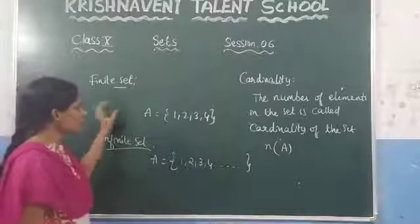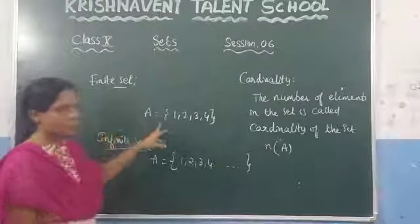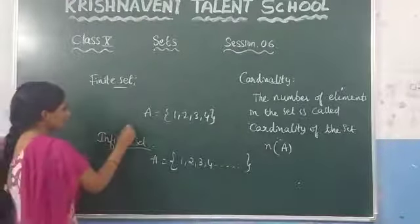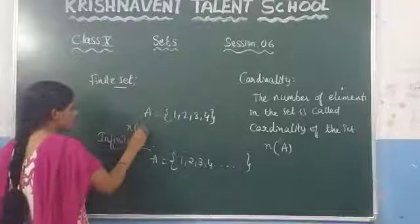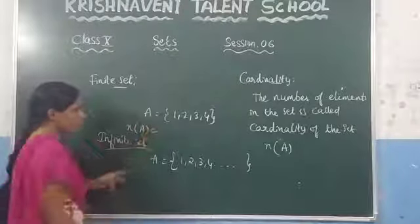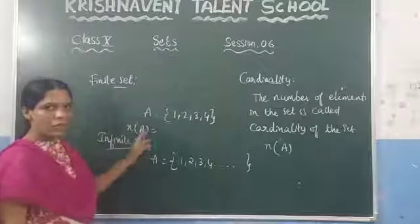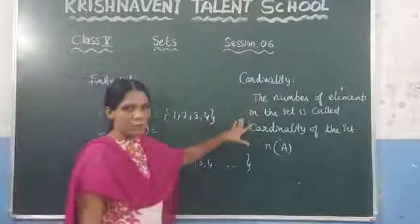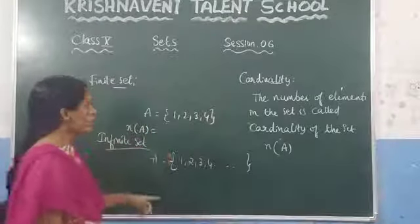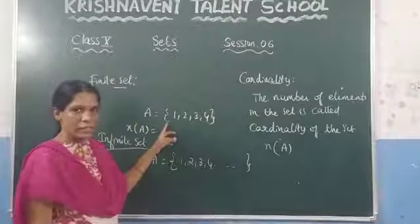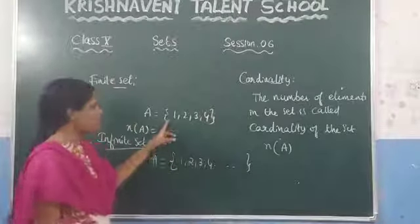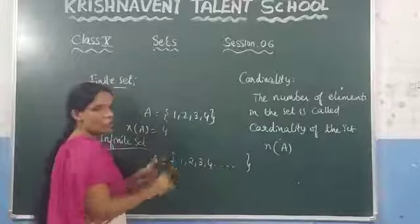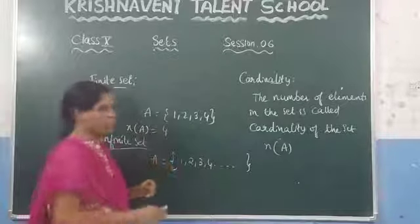Suppose they ask: what is the cardinality of the set? The cardinality is denoted by N(A), and it means the number of elements in the set. You need to count the number of elements: 1, 2, 3, 4. So we can see that N(A) is equal to 4.